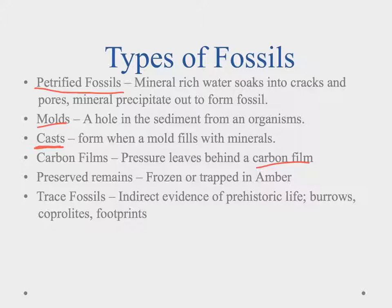We can have preserved remains, and that's where we have a frozen organism, like a mammoth trapped in the ice, or an insect trapped in amber, like we saw in Jurassic Park. This is where an organism is trapped in something else and gets preserved that way.